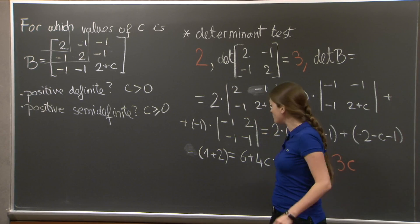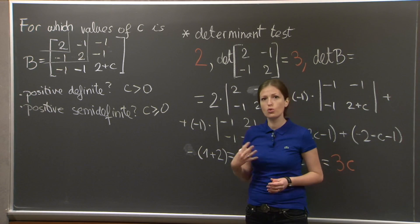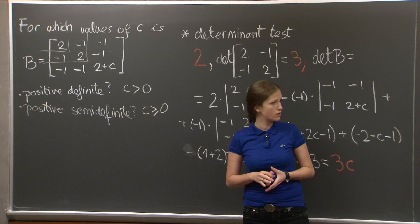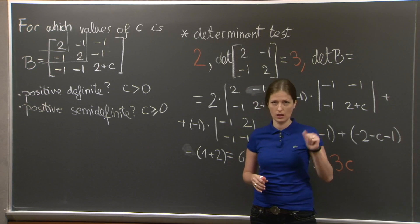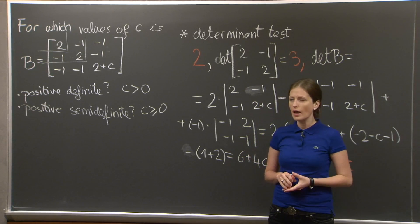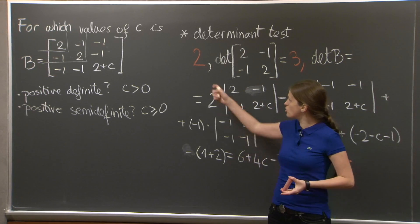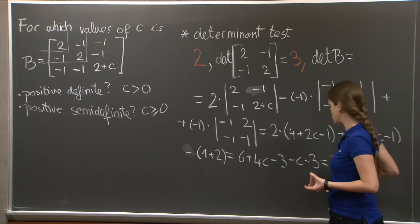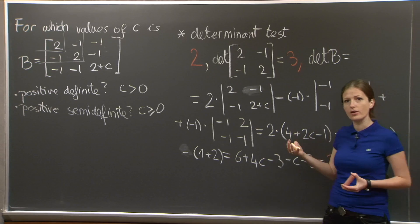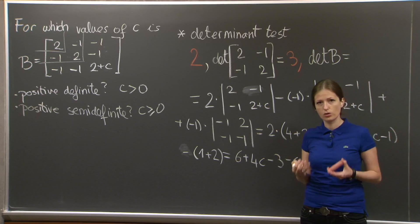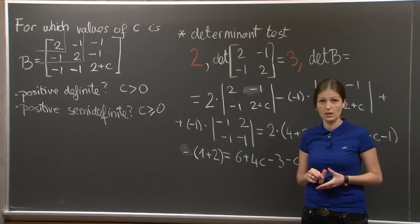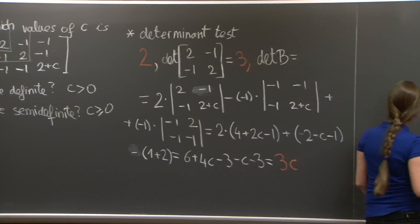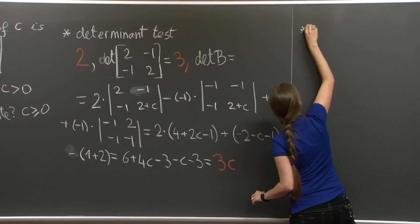Now let me show you two more tests to demonstrate that, first, they take longer, and second, to see these numbers and their quotients show up in other tests, and to try to convince you that these tests really are equivalent. Let me do the pivot test for you.